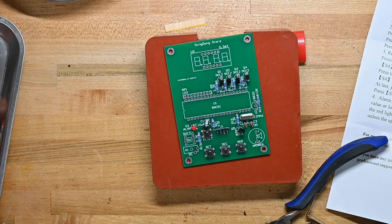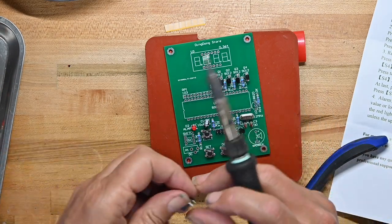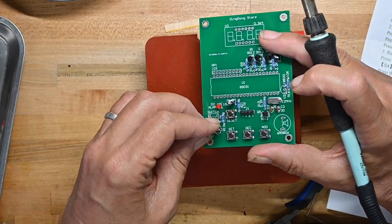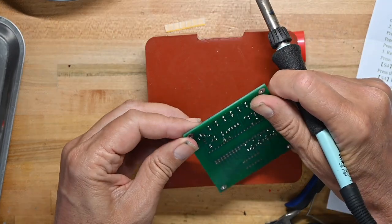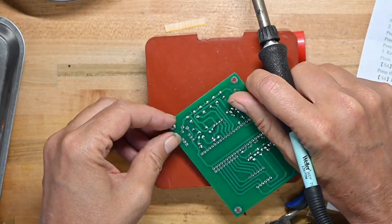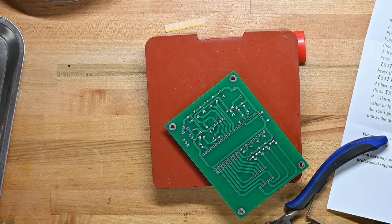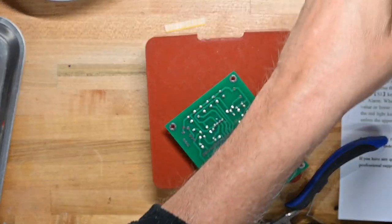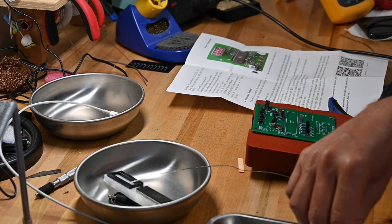Now put the DC power supply socket on. Goes right here. Pins are offset, so it would be hard to get it wrong. We'll need another piece of solder though.